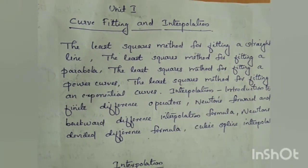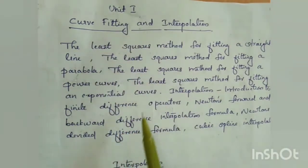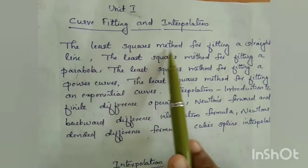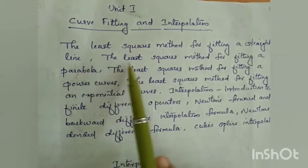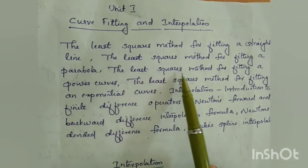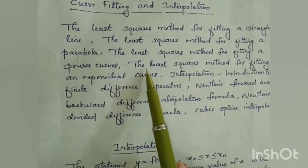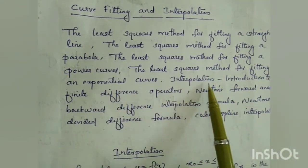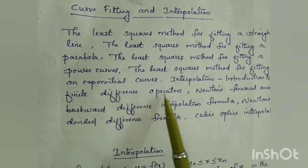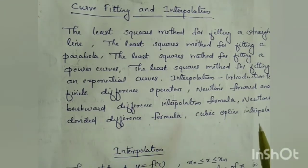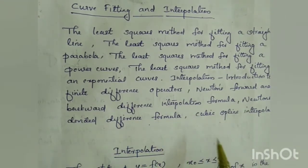Unit 1: Curve Fitting and Interpolation. The contents of Unit 1 are: the least squares method for fitting a straight line, a parabola, a power curve, and an exponential curve. Then interpolation: introduction to finite difference operators, Newton's forward and backward difference interpolation formula, Newton's divided difference formula, and cubic spline interpolation.